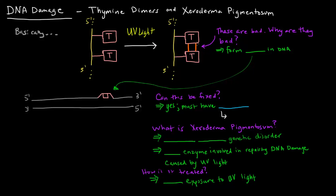So these thymine bases become covalently bonded right next to each other. Now that is not normally supposed to happen, these are bad. Why are they bad? Well they form these things called lesions in the DNA, so they damage the DNA structure.